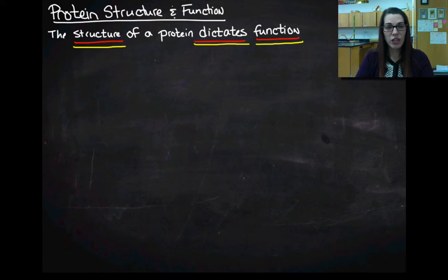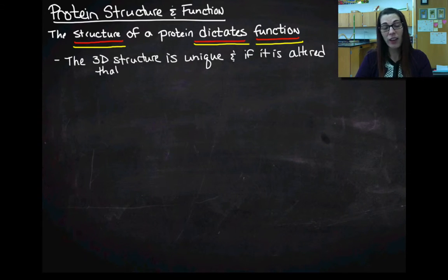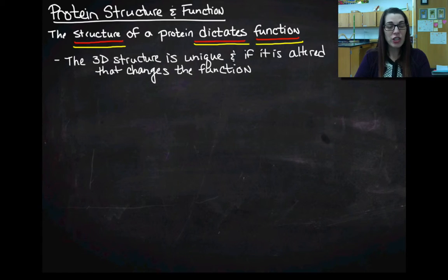You're going to find structure dictates function throughout biology all year long. The 3D structure is unique, and if I change that structure, if I alter the structure, that's going to alter its functionality. So if I take and change the shape of a hemoglobin molecule, that's going to make it unable to carry oxygen as well as the normal hemoglobin molecule. You can think of this like a lock and a key. If I have my key and that's my protein, and I change the shape of my key, is it going to open the lock? No, because it's specific to that lock.